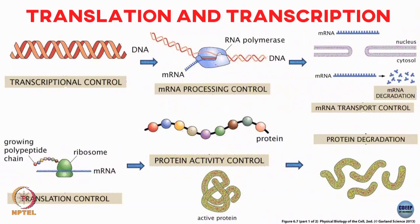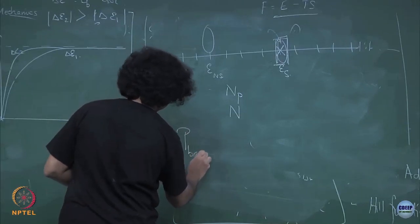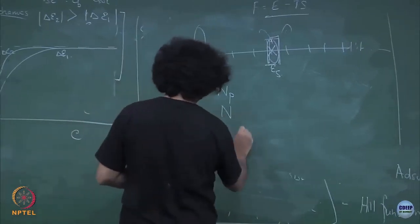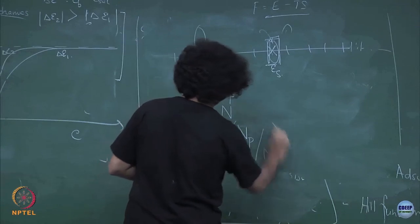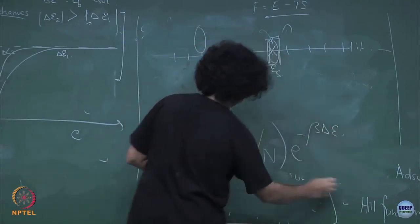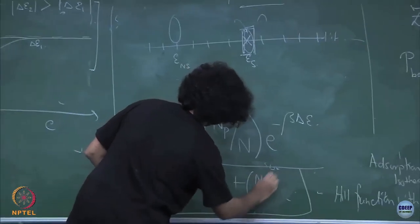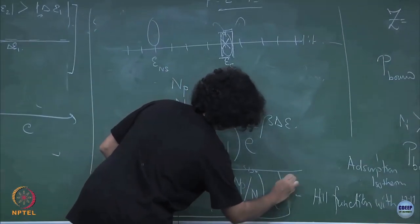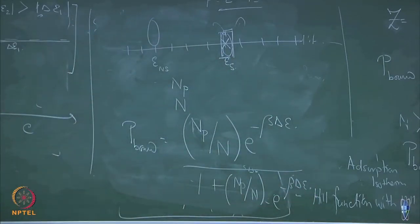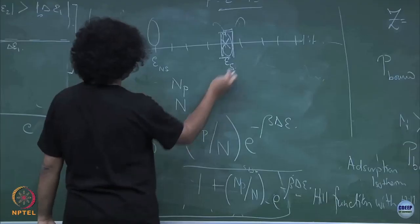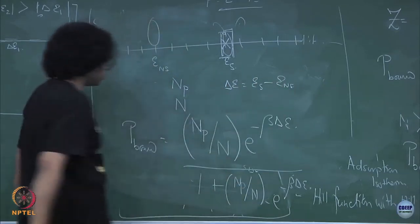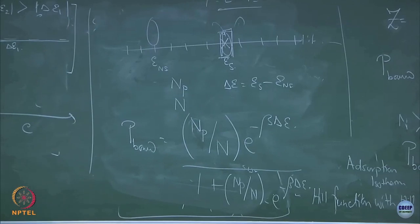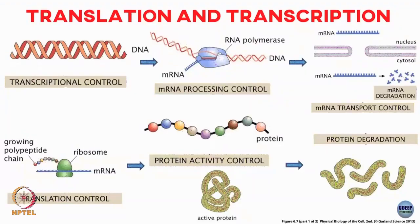If you calculate what is p_bound, this calculation is exactly the same: p_bound is going to be (N_p / N) * e^(−β Δε) divided by 1 + (N_p / N) * e^(−β Δε). Here delta epsilon is the difference between the specific binding energy and the non-specific binding energy, so epsilon specific minus epsilon non-specific.